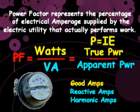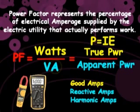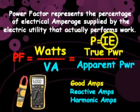VA is measured using your true RMS digital multimeter, but a digital multimeter cannot distinguish between good amps and bad reactive amps and harmonic amps — it sees all current as worthy. The A in VA is a combination of good and bad amps. The multimeter will naturally measure more amps than the kilowatt-hour meter. If you put the amps measured by your multimeter into the power equation, you're going to calculate an inflated watts.